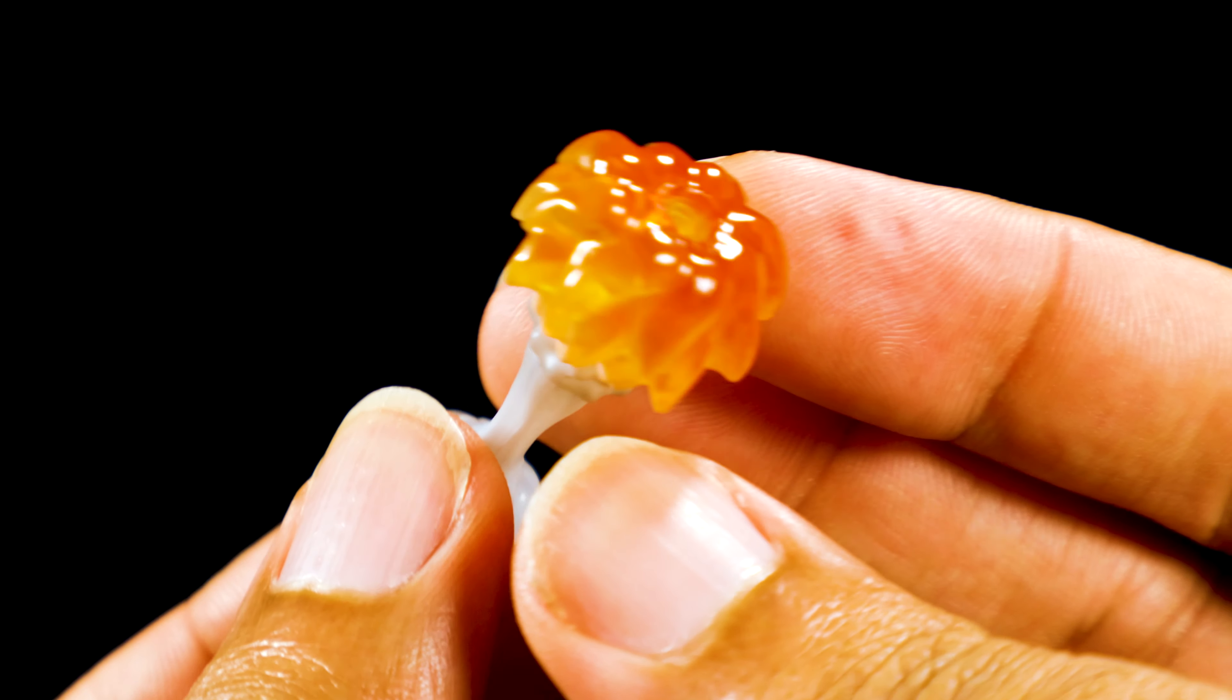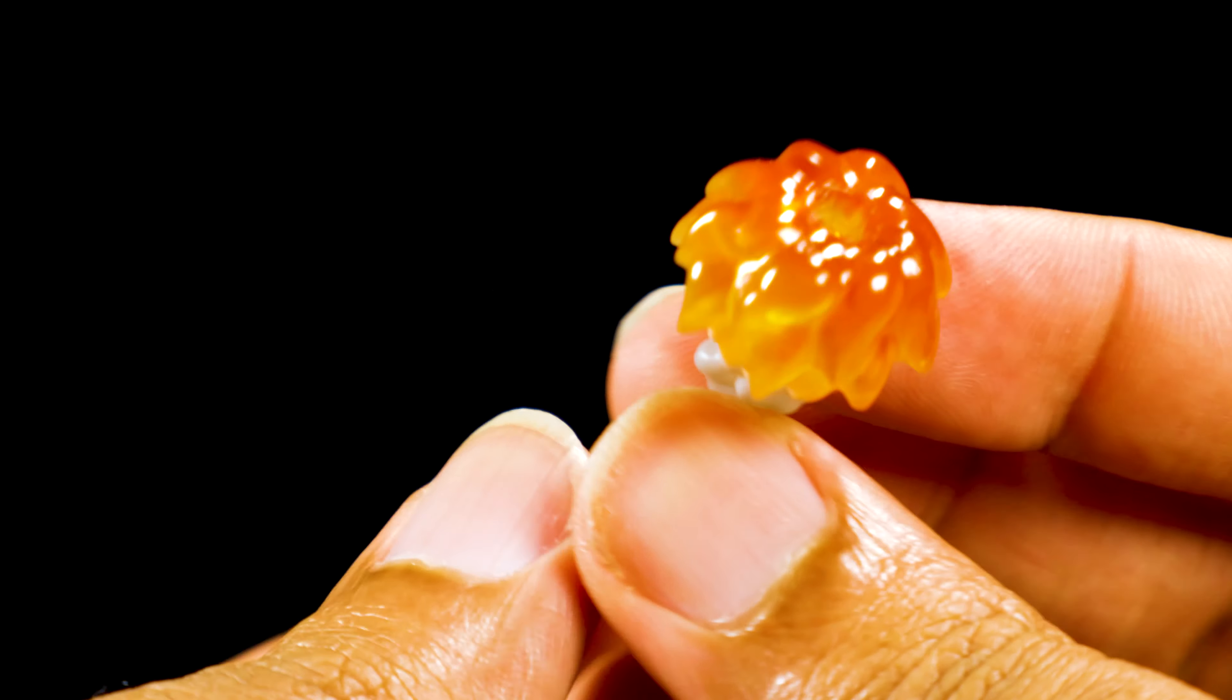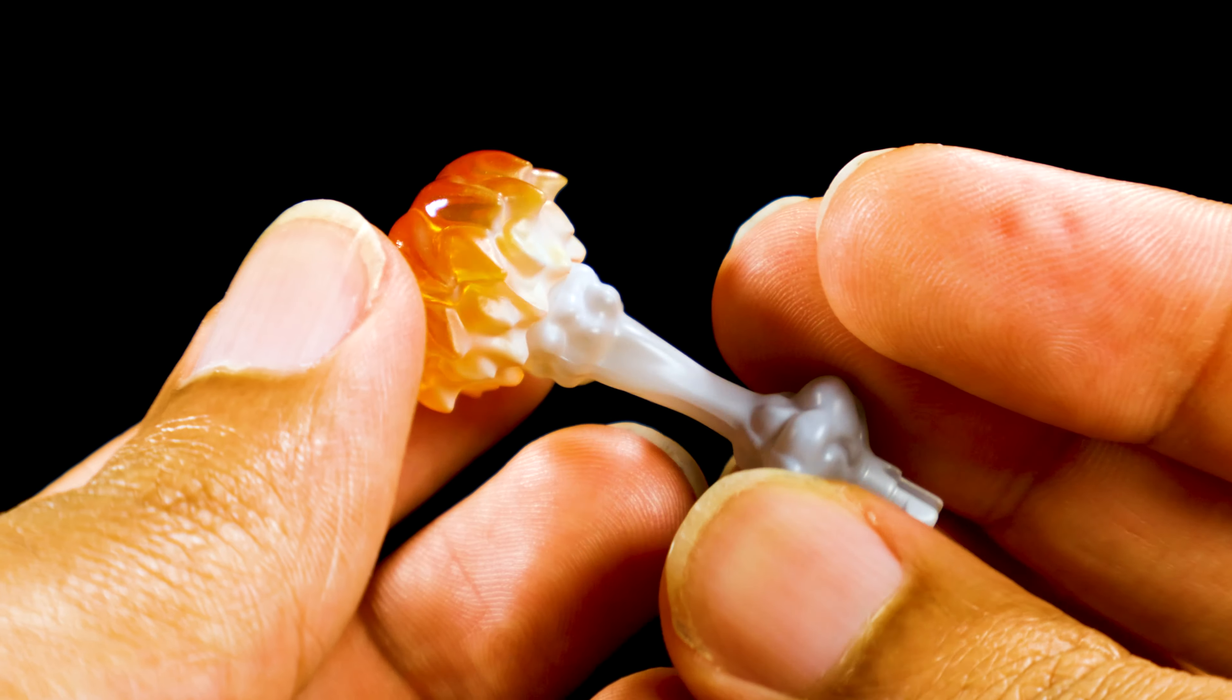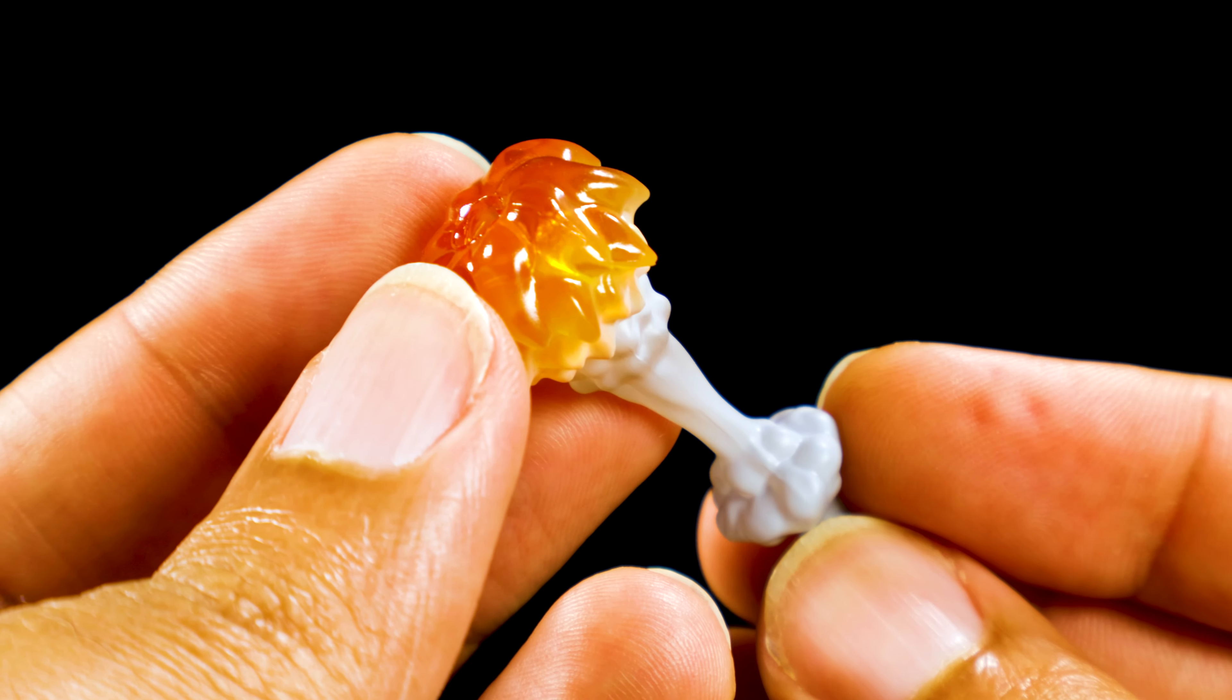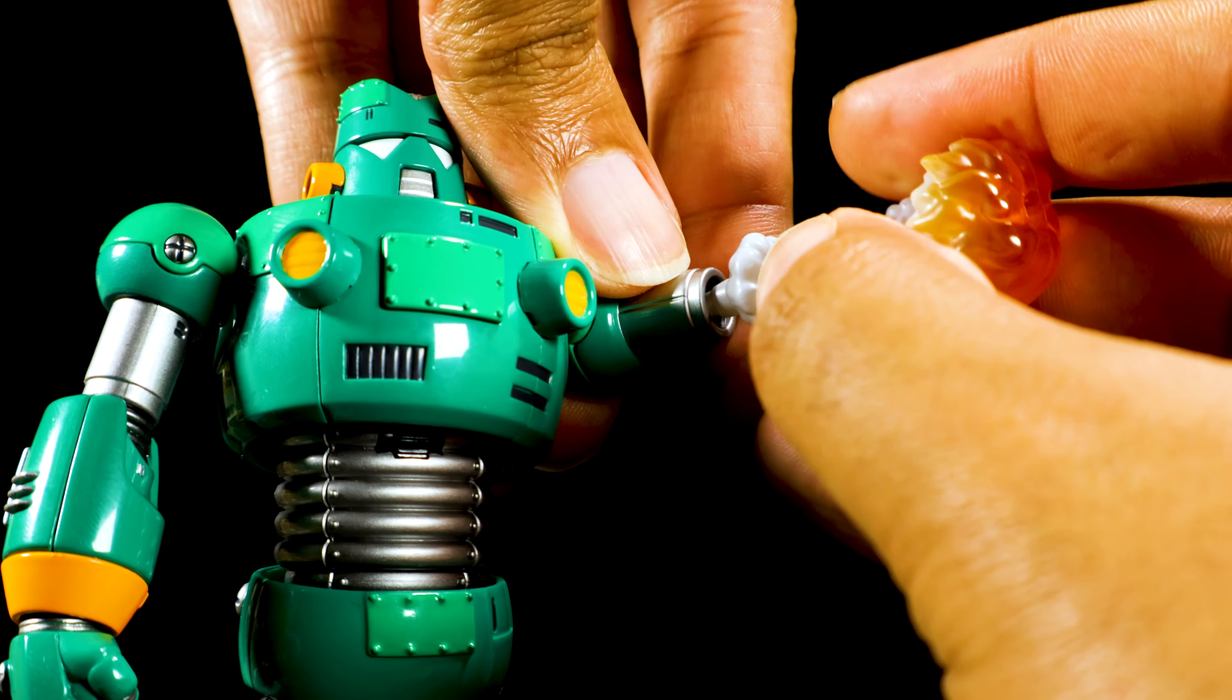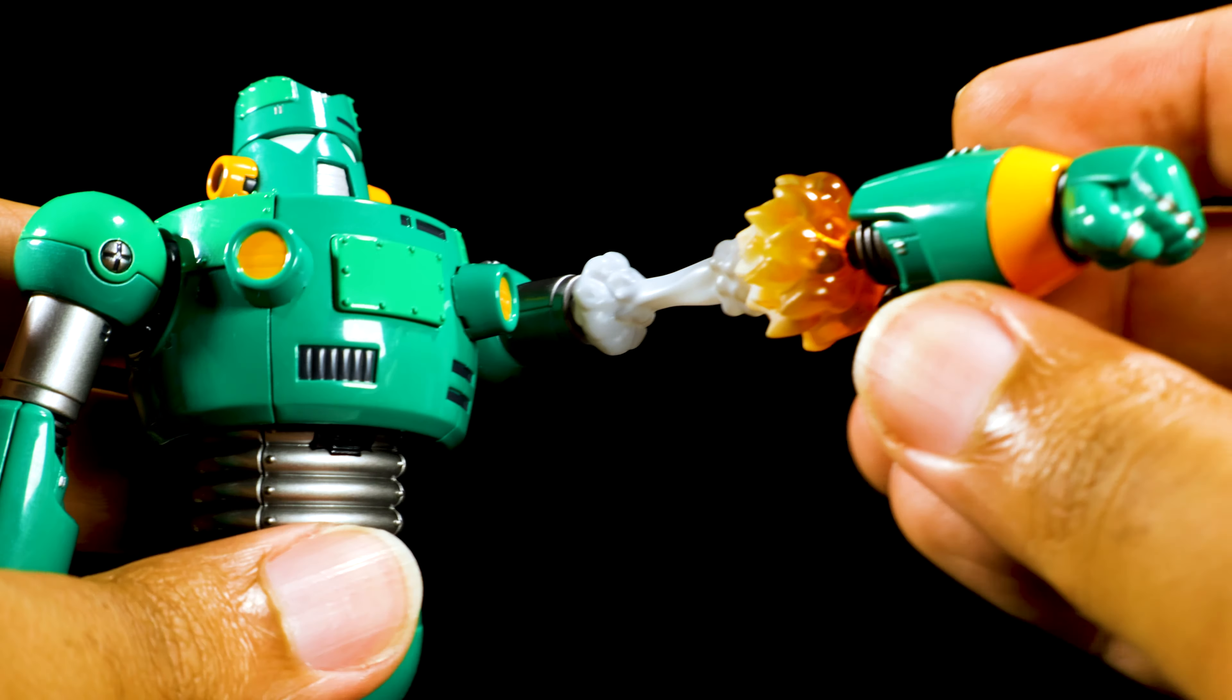Next we have our Kanton Punch effect parts with a fantastic explosive sculpt. We have a nice gray smoke trail that transitions to a translucent gradated burning orange explosion. The effect parts easily plug into the biceps and the forearms easily plug into the effect part.